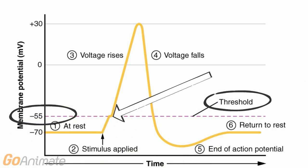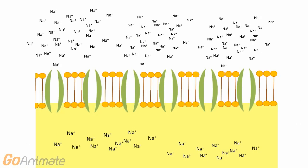This continues until the voltage reaches the threshold, which for neurons is about negative 55 millivolts. Once the threshold is reached, many voltage-gated sodium channels open, allowing sodium into the cell.